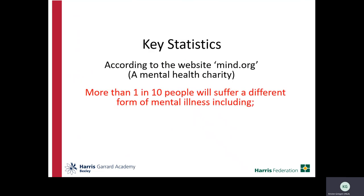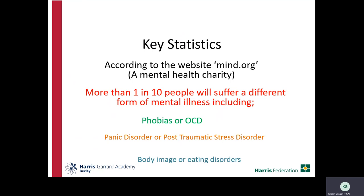More than 1 in 10 people may suffer with a form of mental illness — and this doesn't include just anxiety and depression. Phobias are a genuine fear, not the same as just disliking a spider; this fear can be crippling and change how you live your life. There's also OCD (obsessive compulsive disorder), panic disorder — where people may have panic attacks more often than usual — post-traumatic stress disorder, which occurs after a bad event, and body image issues, which are particularly common in young people going through physical changes and can develop into eating disorders.